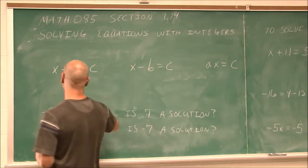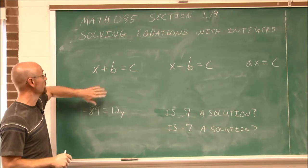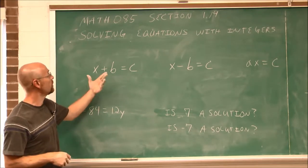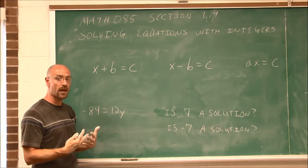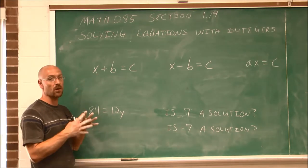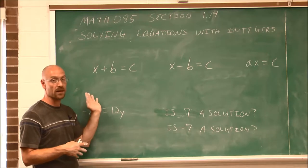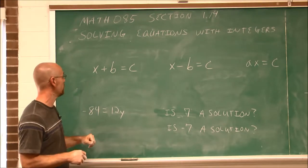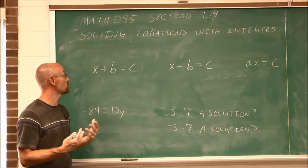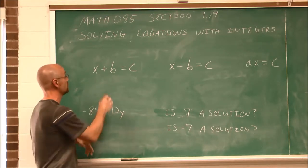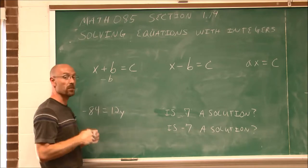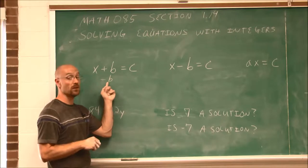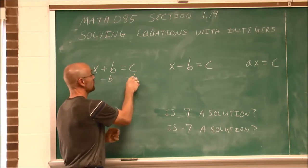Here we have a first degree equation, because the power of the variable is 1, and b and c are just some integers. My goal, my objective to solve an equation, is to get the variable all by itself — whether it's on the left side or the right side of the equation, as long as it's by itself. So I can use subtraction to undo this addition — subtract by b. One of the properties of equality is: what I do to one side, I have to do to the other.